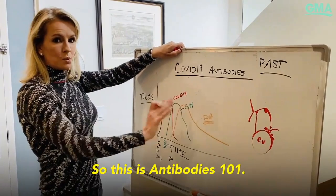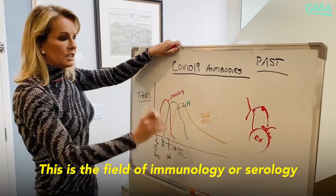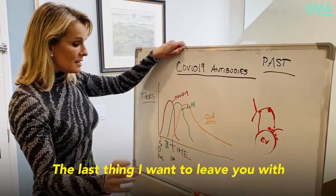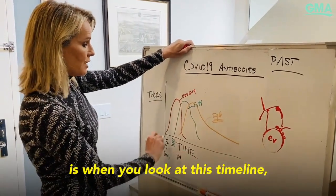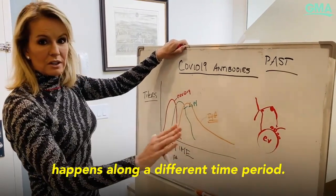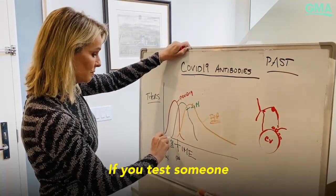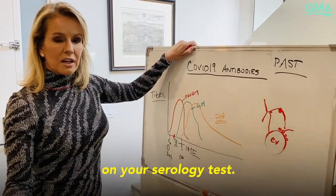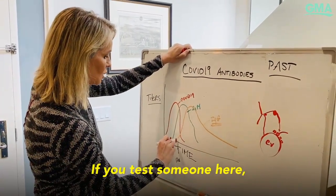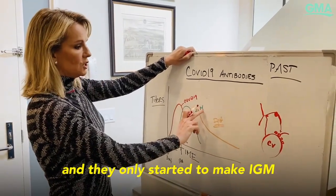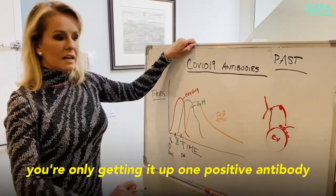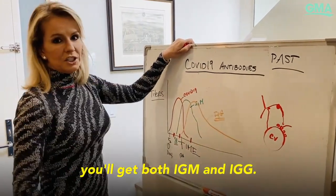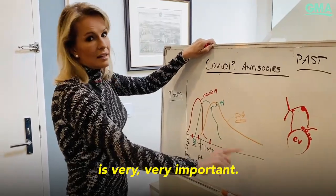So this is antibodies 101 — this is the field of immunology or serology when it comes to exposure to COVID-19, and there's a lot we don't know here. When you look at this timeline, you can see that because each of these things happens along a different time period, if you test someone before they've started to make antibodies, you're going to get a negative result on your serology test. If you test someone who's only started to make IgM but not IgG, you're only going to get one positive antibody. Whereas if you test someone later, you'll get both IgM and IgG. So when you test someone is very, very important.